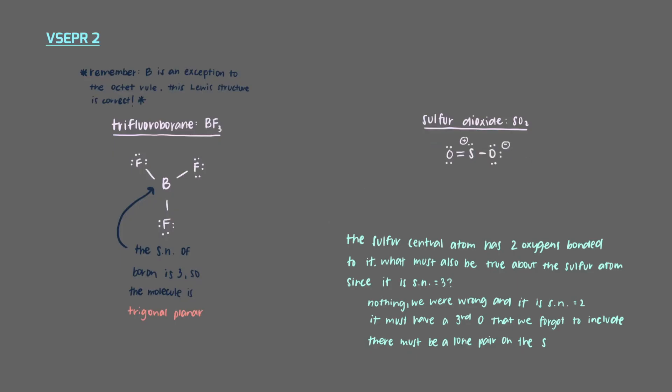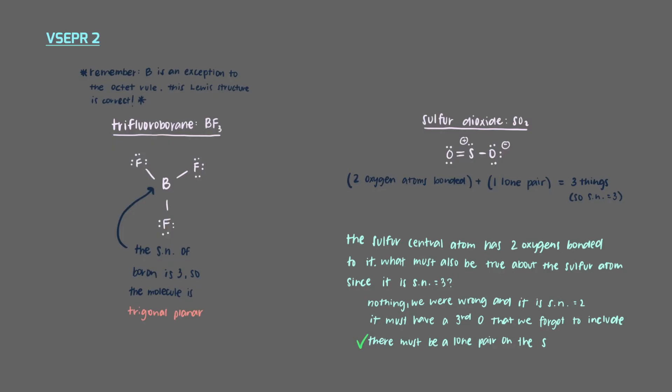This is the Lewis structure for SO2. Notice that there are two oxygen atoms bonded to the sulfur and one lone pair. That makes three things, so steric number 3. It doesn't matter that one oxygen atom is a single bond and the other is a double bond. Each only counts as one group for the purposes of assigning steric number. But even though SO2 and BF3 have the same steric number, the molecules have different shapes and bond angles.